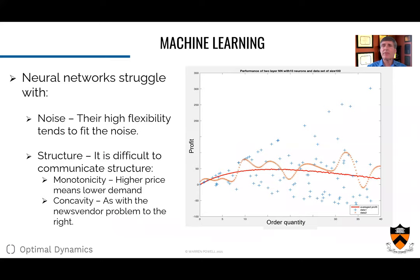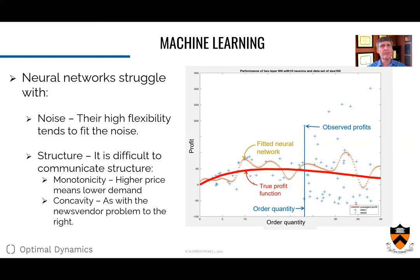But neural networks have difficulty capturing problem structure and handling noise. Here's a classical problem called the news vendor problem, where we're ordering a quantity of product and making a certain profit. If I order a certain quantity, I get an observed profit and it's noisy — it can be high or low depending on market demand. I fitted a neural network to this data and it's not a very good fit. The red line is the true function: the more product you put out, the higher the profit up to a point, then it starts going down. We know about that structure, but it's not easy to tell a neural network — so we have to watch out for some limitations of neural networks.